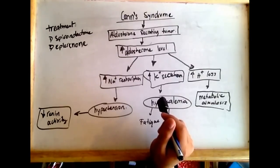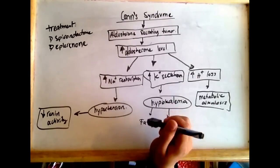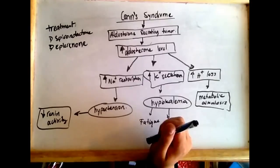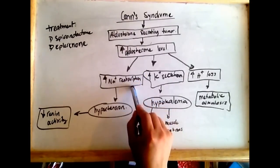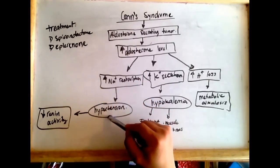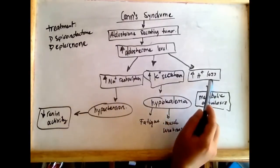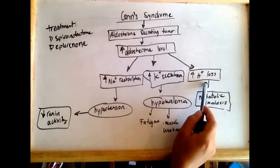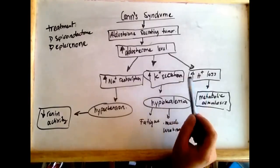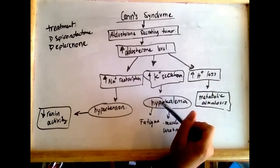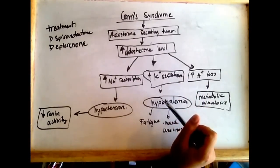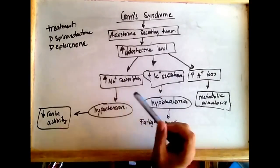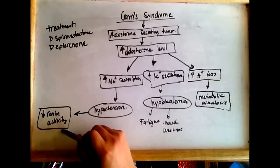To recap: aldosterone causes the reabsorption of sodium and water while wasting potassium. Sodium and water reabsorption causes hypertension, and the wasting of potassium and hydrogen ions at the distal portion of the nephron leads to hypokalemia and alkalosis. Additionally, inappropriately high aldosterone will suppress renin activity as part of the feedback inhibition loop.